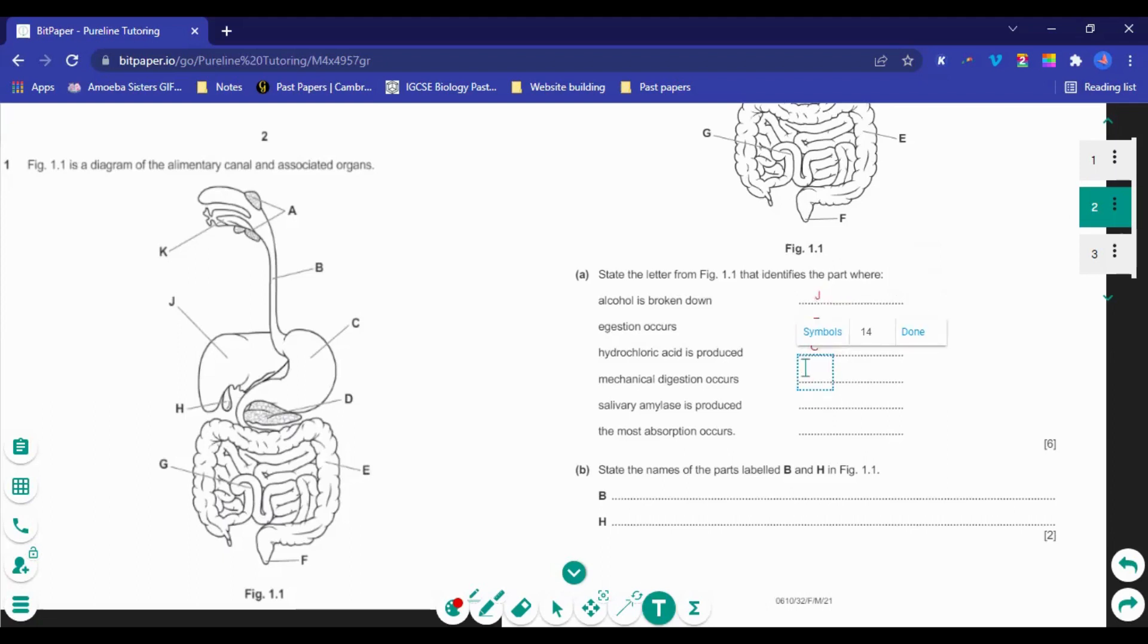Mechanical digestion occurs. For mechanical digestion we need the teeth. We find the teeth in the mouth. This is K. Salivary amylase is produced. Salivary amylase is produced in the mouth. This is A. And the most absorption occurs. The most absorption occurs in the small intestines which is the material from digestion. This is G.